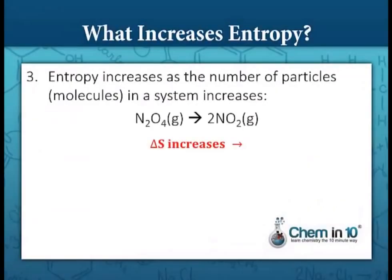Number three: entropy increases as the number of particles in a system increases. When we go from dinitrogen tetraoxide to two molecules of nitrogen dioxide, we are increasing the number of particles — going from one molecule to two — so entropy is increasing.